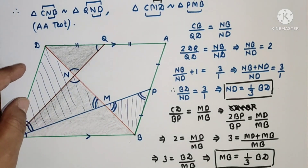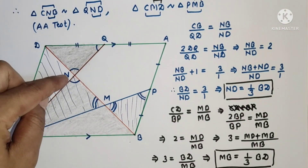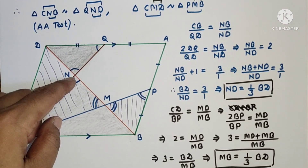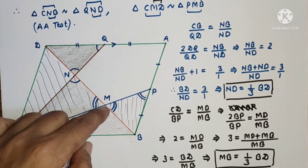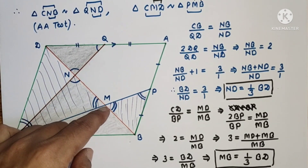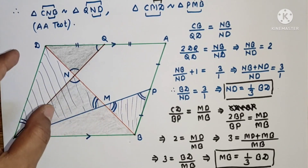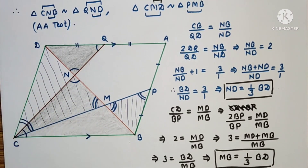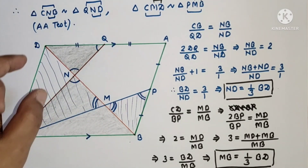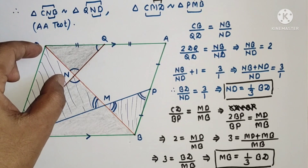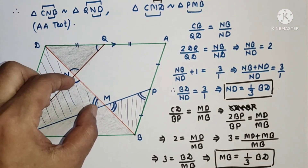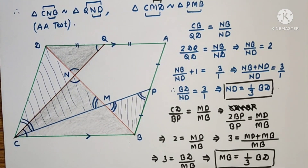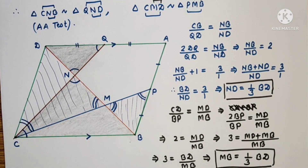Therefore we can say that N is the point of trisection and M is the point of trisection, which means N and M trisect the diagonal BD. Hence we can say that DN is equal to NM is equal to MB. Hence proved.